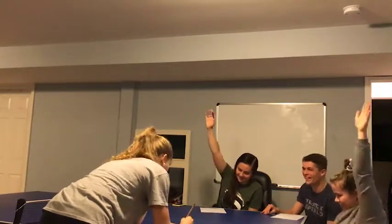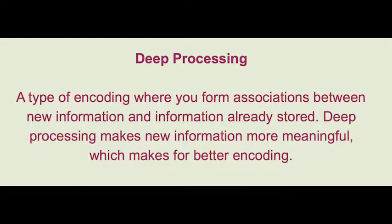After repeating each list twice, they wrote down all the words they could remember. There were more remembrances of words from the second list than the first, because they were relating the words to information they already had stored. Deep processing is a type of encoding where you form associations between new information and information already stored. My siblings remembered more words from the second list because they were encoding using deep processing, which made the information more meaningful.